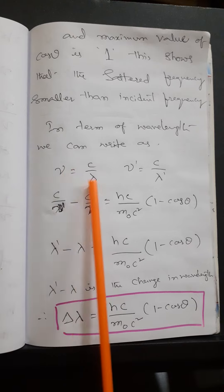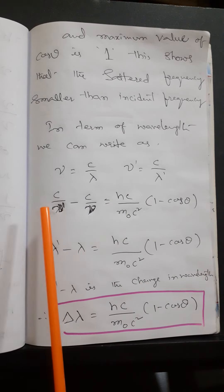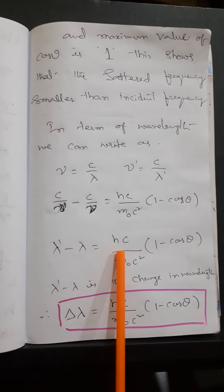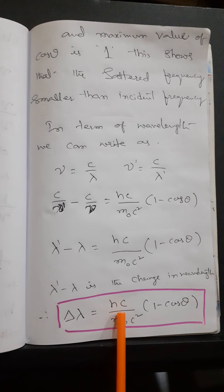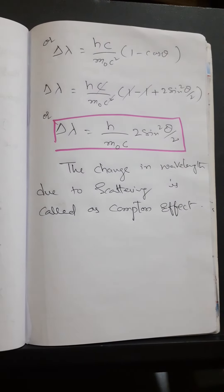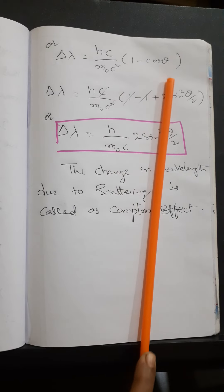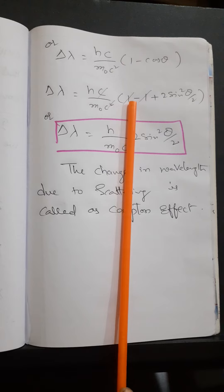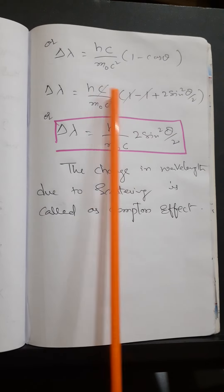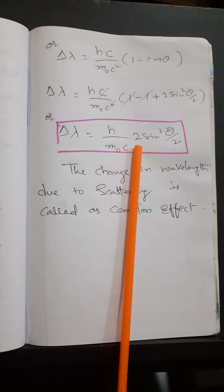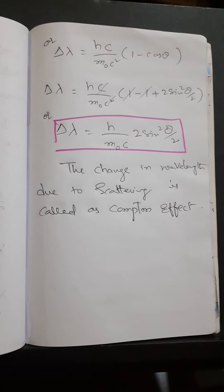In terms of wavelength, using nu = c/lambda: c/nu' − c/nu = hc/(m₀c²)·(1 − cosθ), which gives lambda' − lambda = h/(m₀c)·(1 − cosθ). Here lambda' − lambda is the change in wavelength, represented as Δλ = h/(m₀c)·(1 − cosθ). Using the identity 1 − cosθ = 2sin²(θ/2), this becomes Δλ = (2h/(m₀c))·sin²(θ/2). The change in wavelength due to scattering is called the Compton shift. Thank you, for more videos subscribe to my channel Physics.